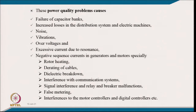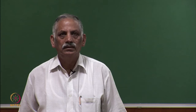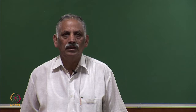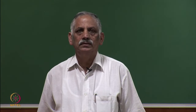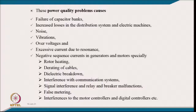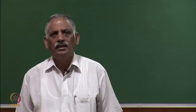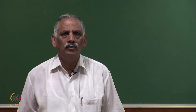Harmonics also cause increased losses in the distribution system and electrical machines. In electrical machines, these power quality problems produce harmonic torque, then vibration, and noise. It can also cause overvoltage and excessive current due to resonance — a phenomenon between source impedance and the capacitor connected at the point of common coupling.